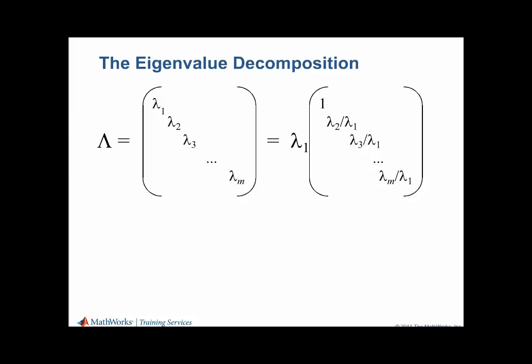Here we see the matrix of eigenvalues. If we factor out the eigenvalue with the largest magnitude, the first diagonal element is 1, and all the remaining elements are less than 1 in magnitude. Consequently, when raised to a large power, all elements except the first one become extremely small. Let's use this to understand the structure of A to the n times x. V inverse times x is a vector. Lambda to the n is almost all zero except for the 1,1 element. So Lambda to the n times V inverse x is a vector of almost all zeros except for the first element. Multiplying this by V then results in a vector that is a multiple of the first column of V, the first eigenvector of A.